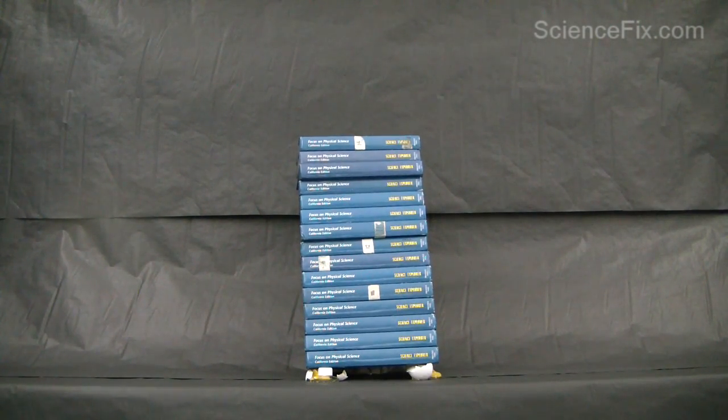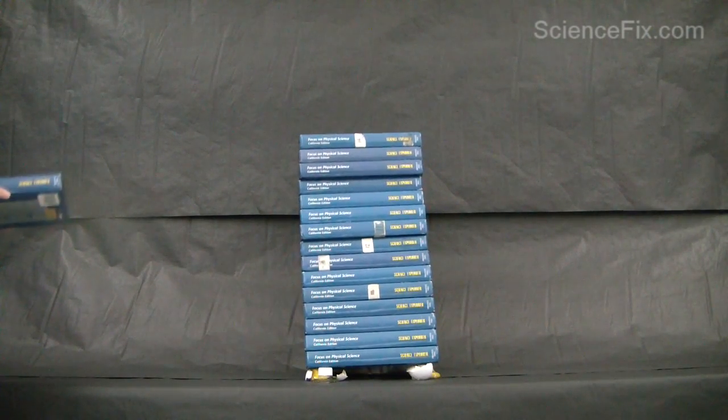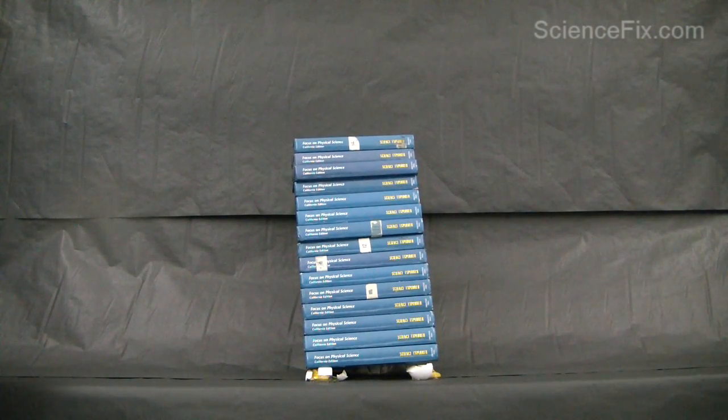So we had 15 books on the eggs, and so 15 books times 5 pounds per book equals 75 pounds of weight total. So for three eggs, that would be 25 pounds of compression weight per egg.